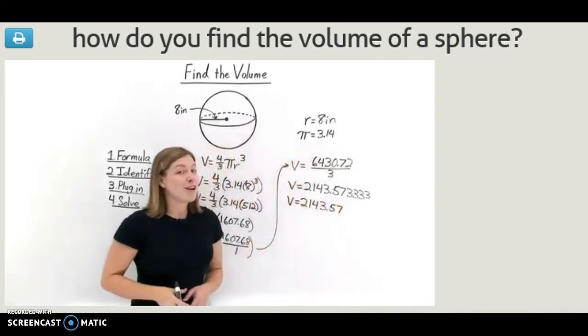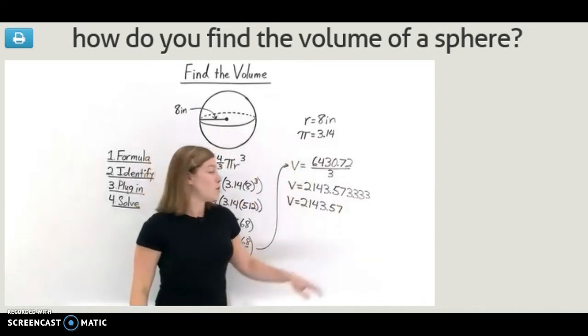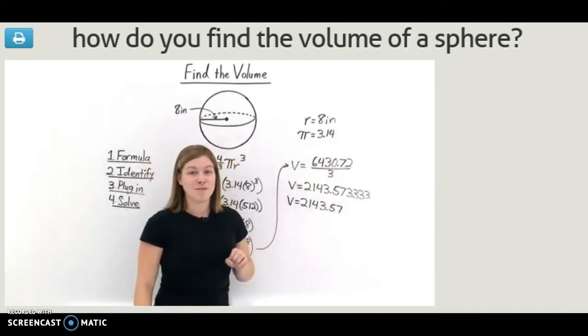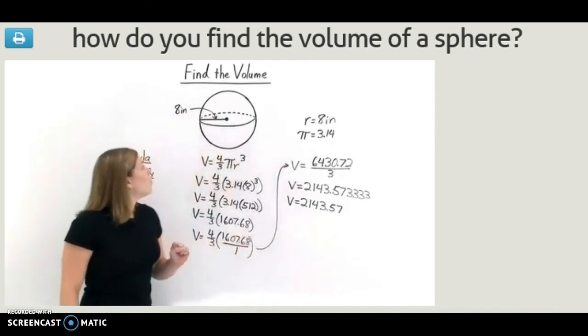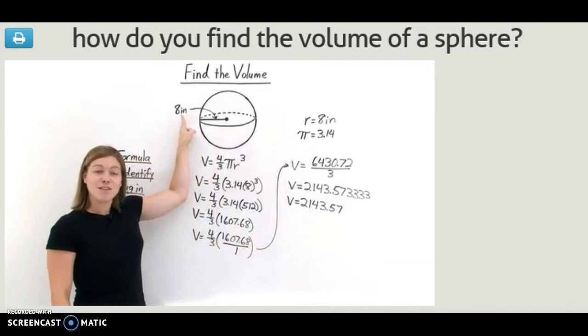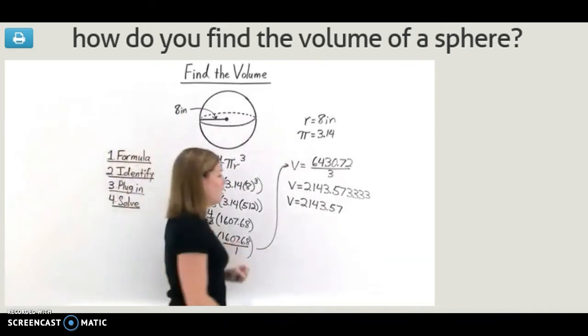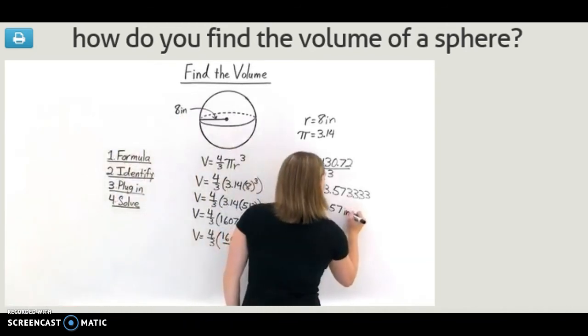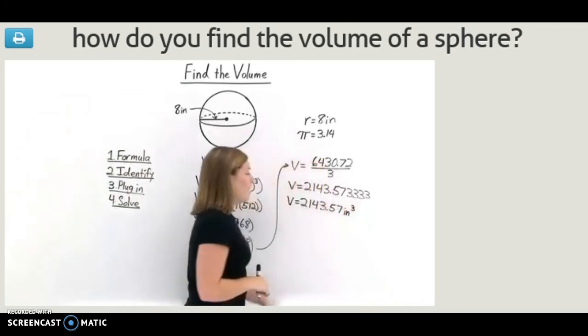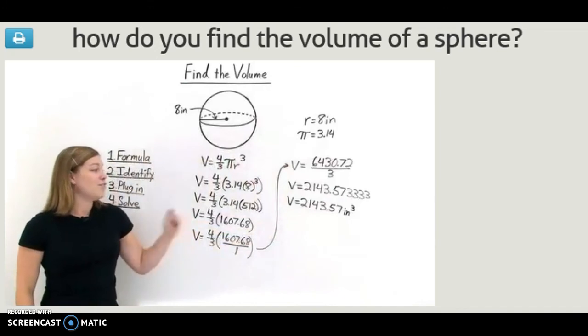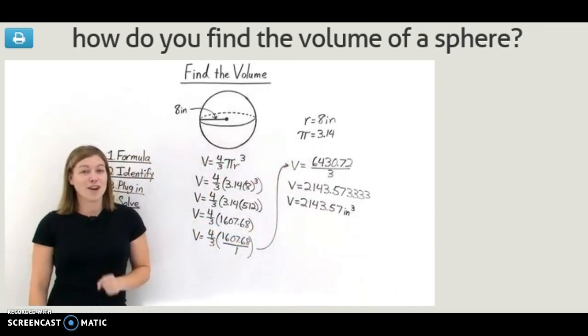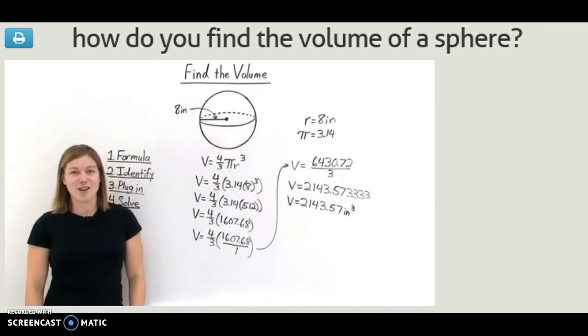But before we can call this our answer, we need to remember to put units, since volume is a measurement. And volume is measured in units cubed. Well, we're working with inches, since that's what our radius is measured in. That means that our volume is measured in inches cubed. And now we have our answer. The volume of this sphere is 2,143.57 inches cubed.